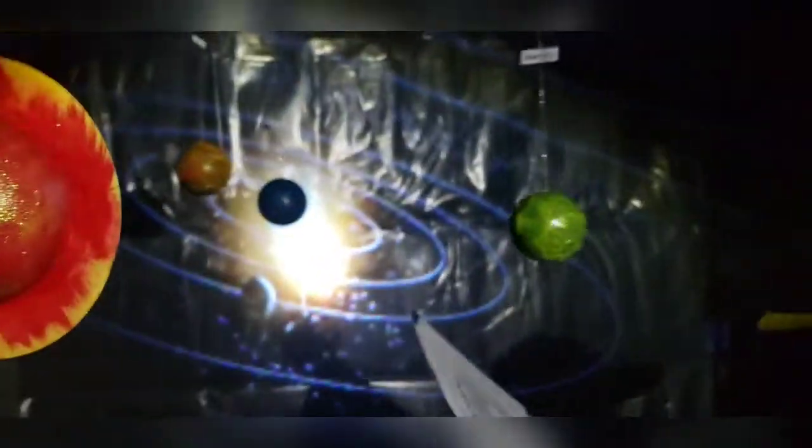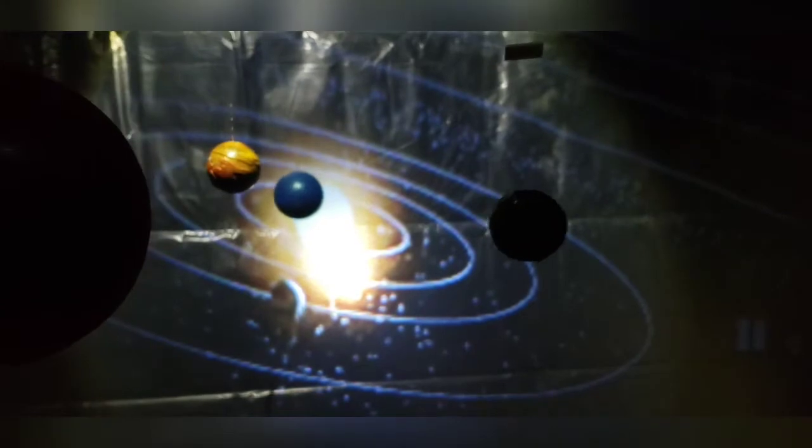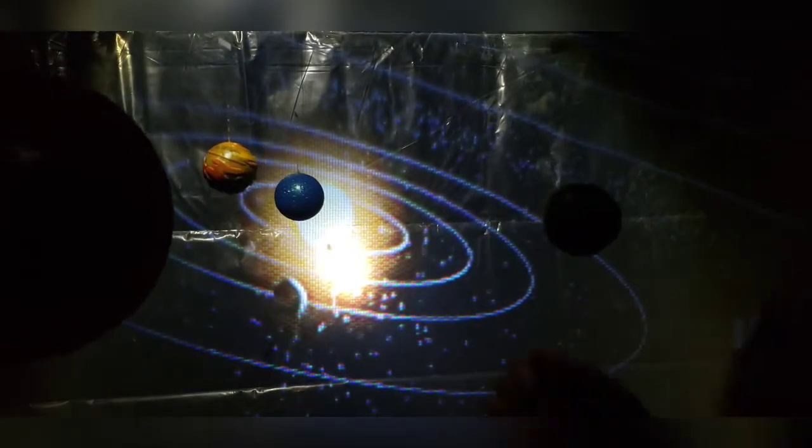And then, this is Uranus. Uranus is aqua, and the blue is 51,000 kilometers in diameter.